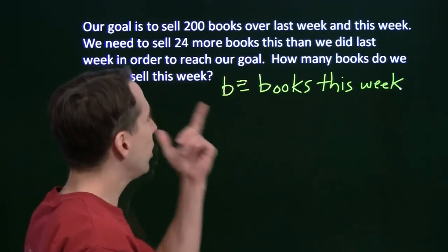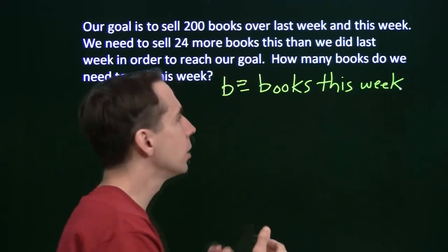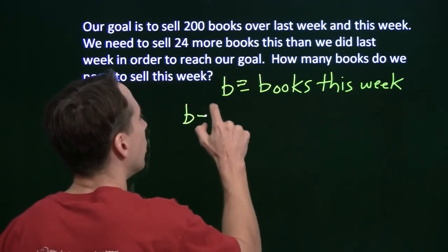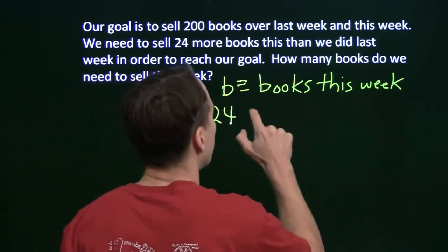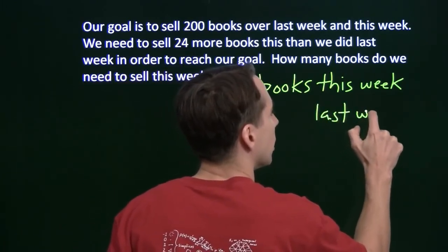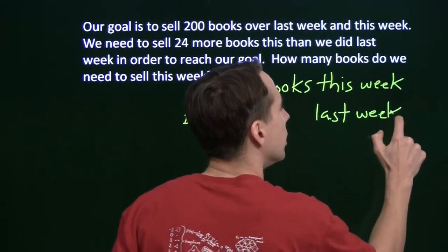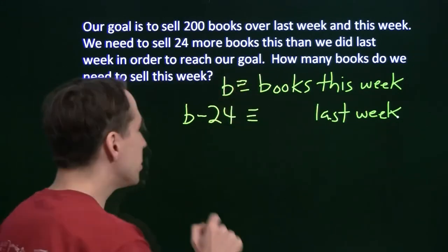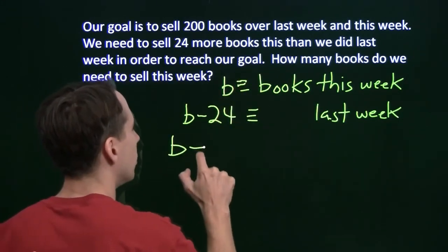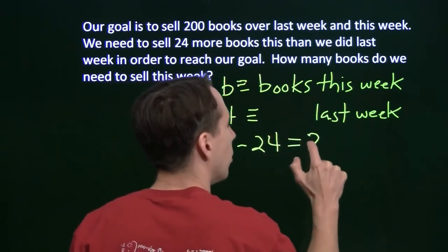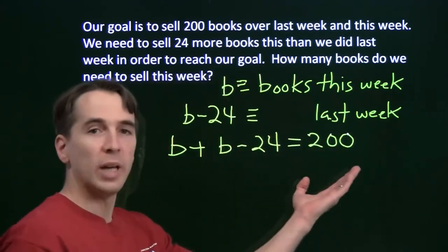Now let's figure out what else we can find. We need to sell 24 more this week than last week. So last week then would be B minus 24. And our goal is to sell 200 total. So these two have to add up to 200. And there we go. We found the equation that we have to solve.